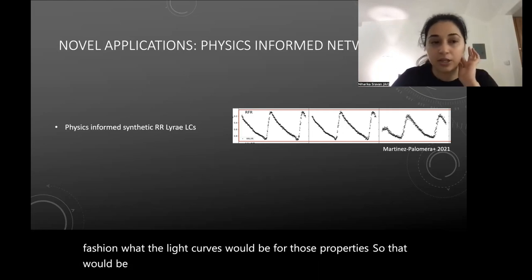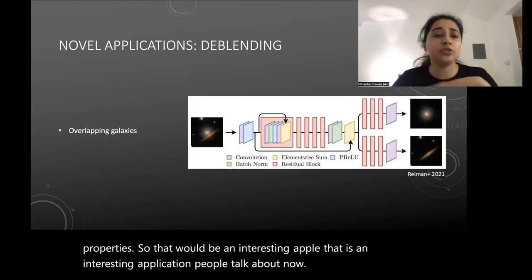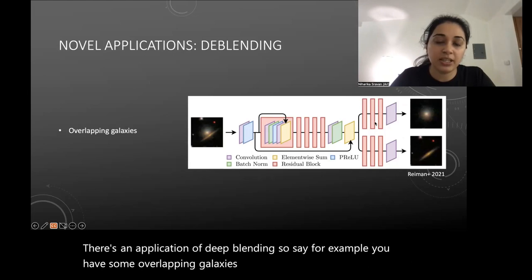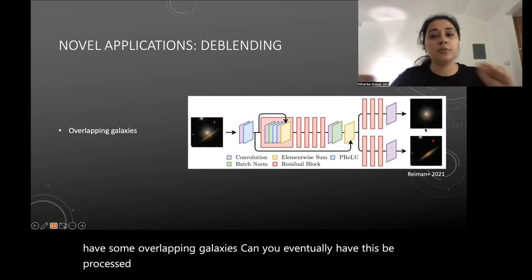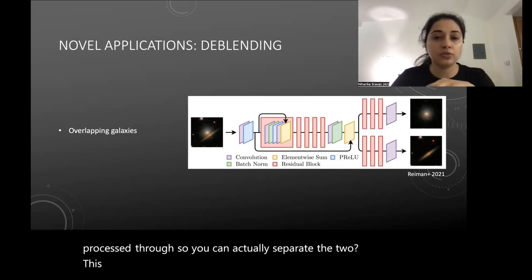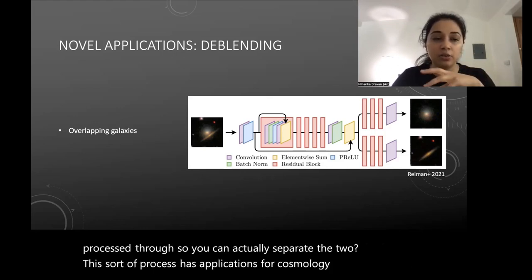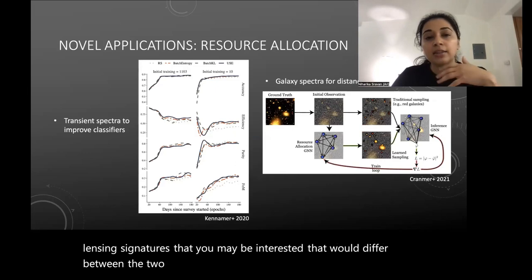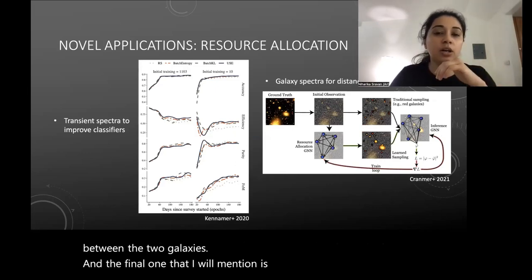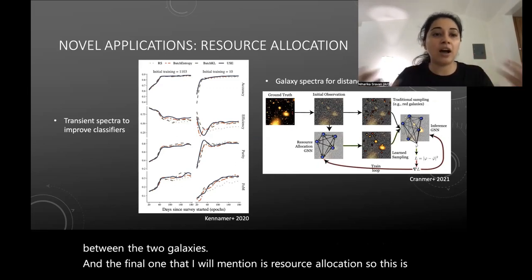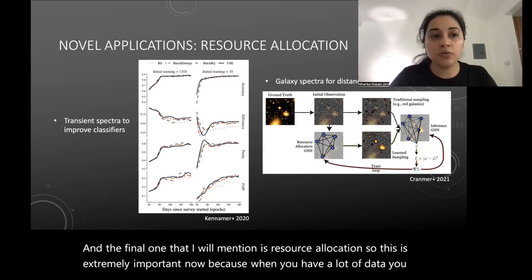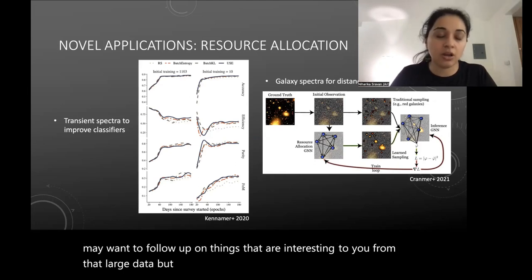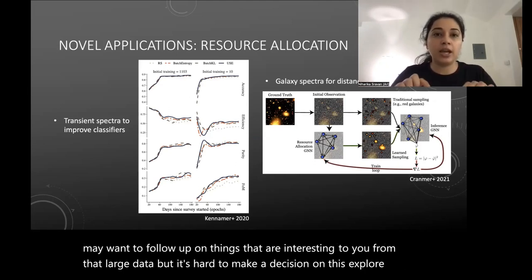There's also an application called deep blending: if you have overlapping galaxies in an image, can you process the image to separate the two? This has applications for cosmology via gravitational lensing signatures that differ between the two galaxies. Finally, resource allocation is extremely important — when you have a lot of data and want to follow up on interesting targets, you face an explore-exploit situation: many options to choose from, but you don't know which is most useful given your limited resources.